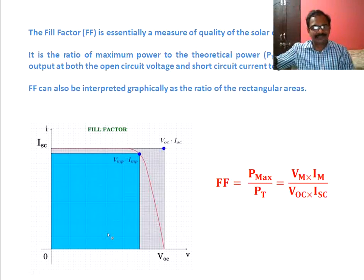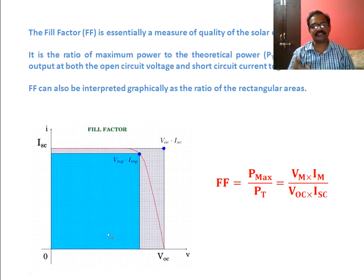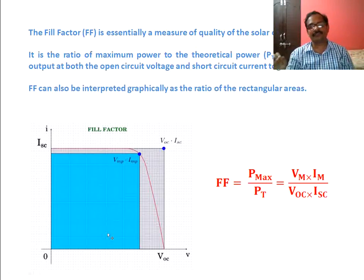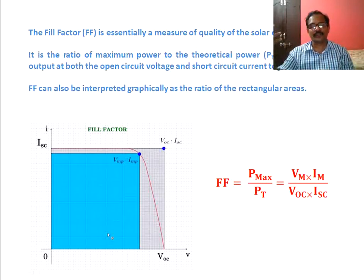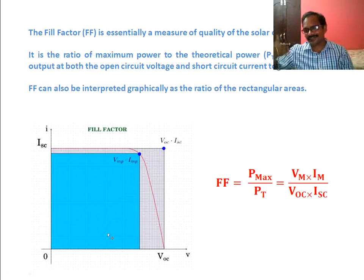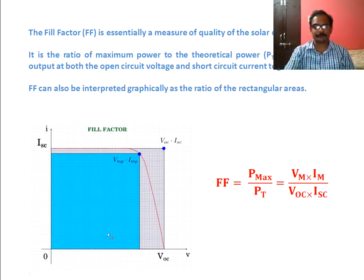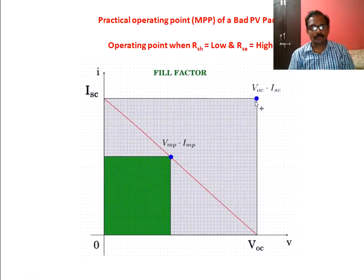Fill factor can also be interpreted graphically as the ratio of the blue or cyan rectangle to the gray rectangle — that is, VM into IM divided by VOC into ISC. It represents the figure of merit or quality of a solar panel. If fill factor is more, then the quality of a solar panel is very high; if fill factor is less, the quality is very low. Fill factor lies between zero and one.